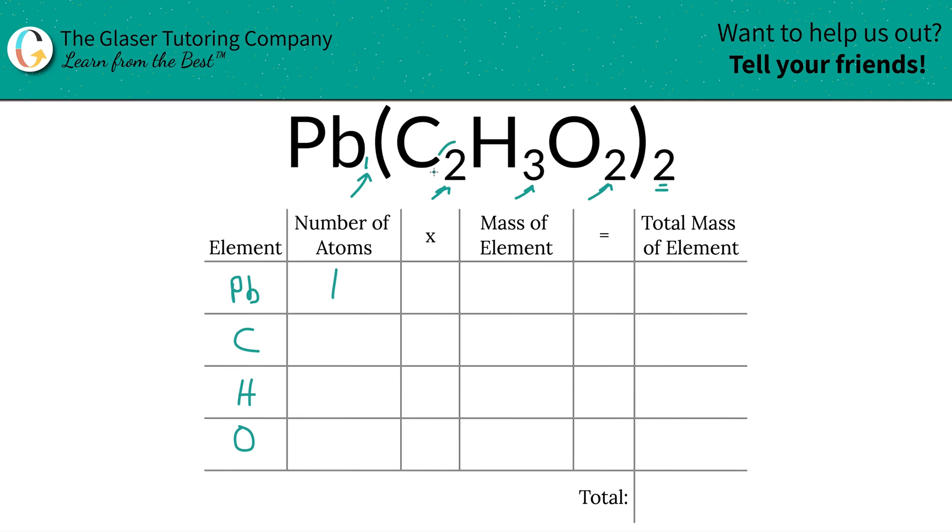We take a look at the carbon. Now carbon, there are two carbons here, but there is also an outer subscript to this entire polyatomic anion called the acetate ion. And in order to find the total carbon, we take the inner subscript and multiply it by that outer subscript. So that'd be four carbons.